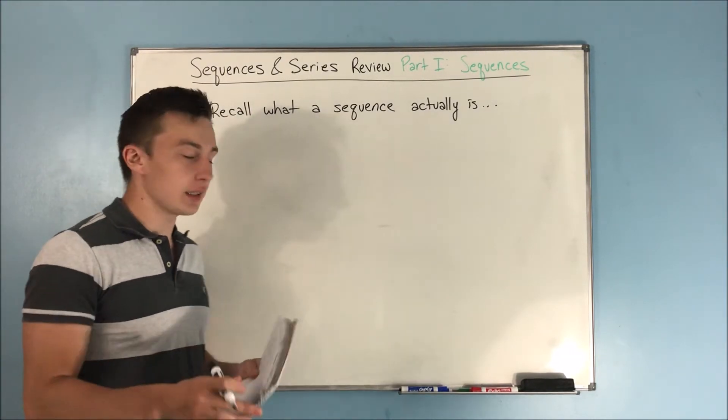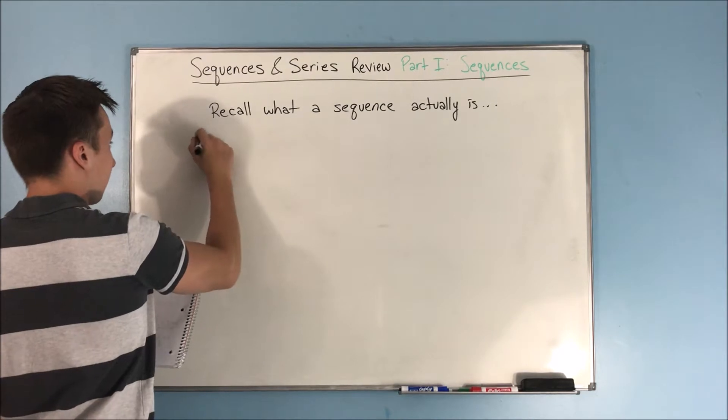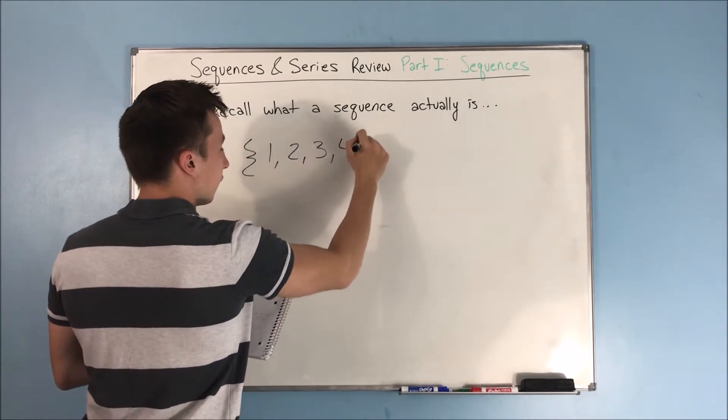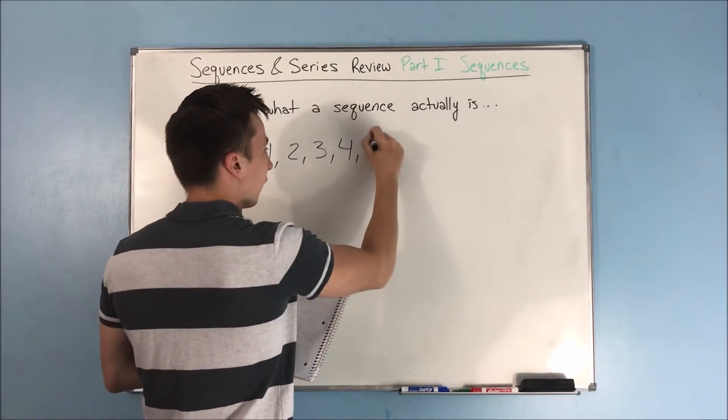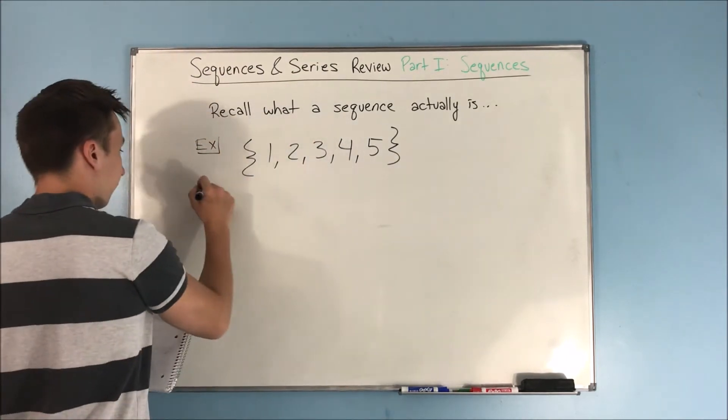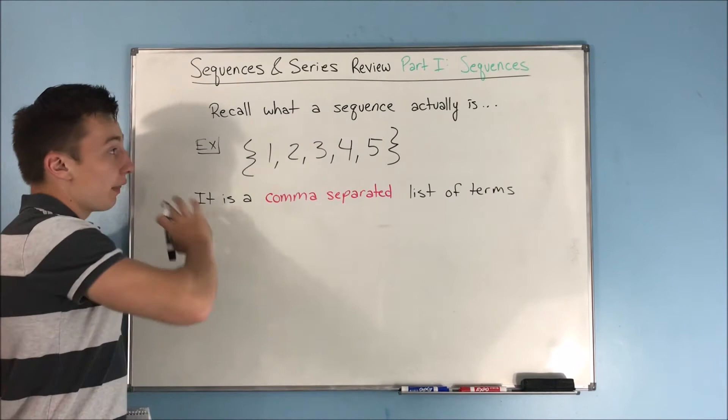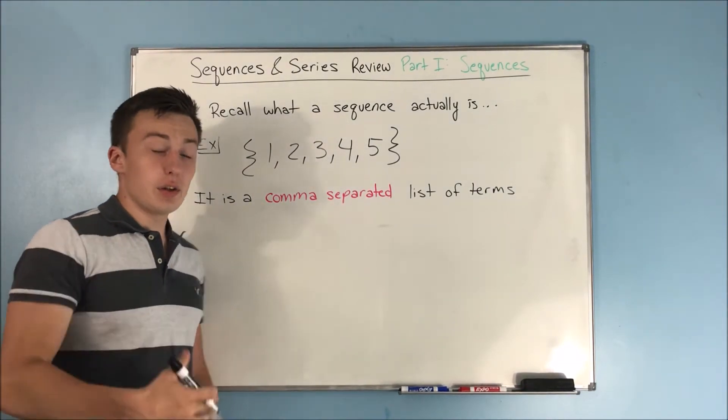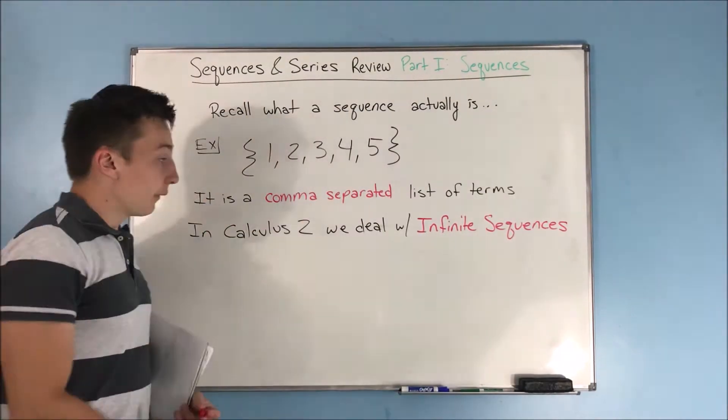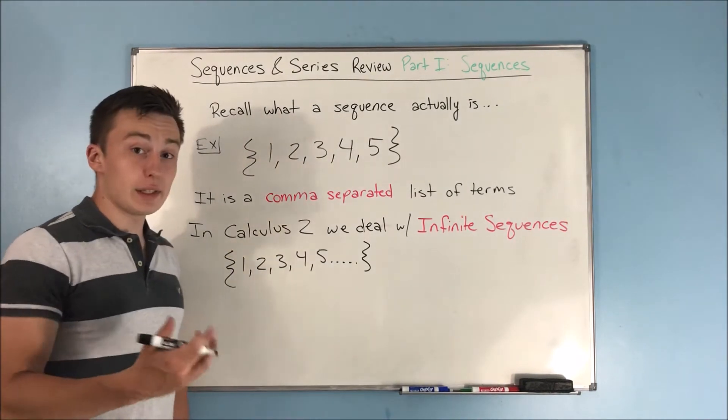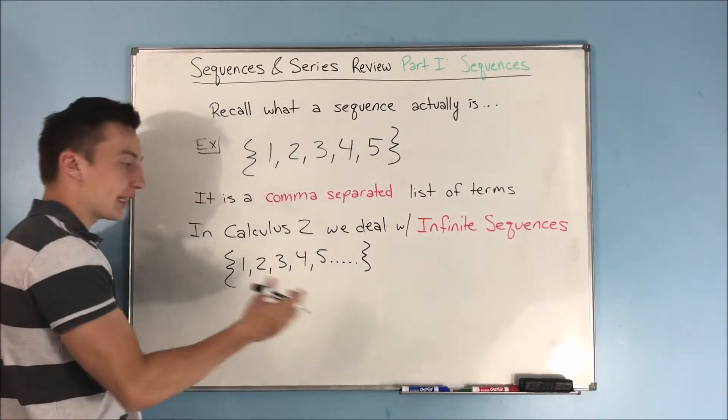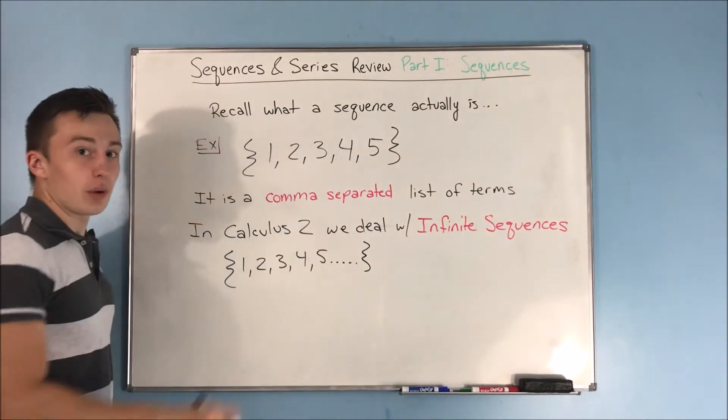Recall what a sequence actually is. Remember that a sequence is different from a series. A sequence, here's an example: 1, 2, 3, 4, 5. It is a comma separated list of terms.